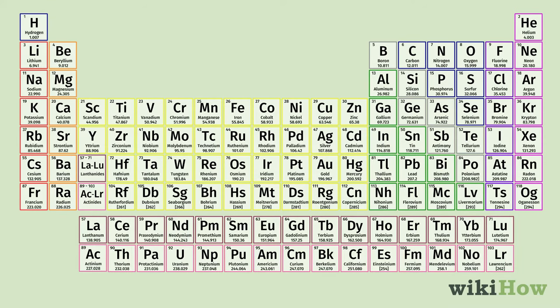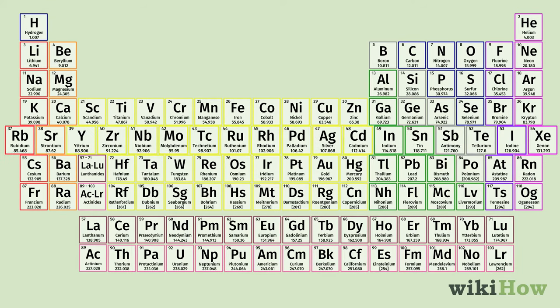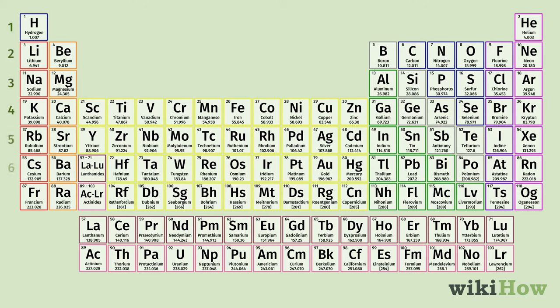When you read the periodic table in rows going across from left to right, you will find that the elements in each row share the same number of atomic orbitals. The orbitals are the regions around the atom's nucleus where electrons are most likely to appear. Each of these seven rows is called a period.